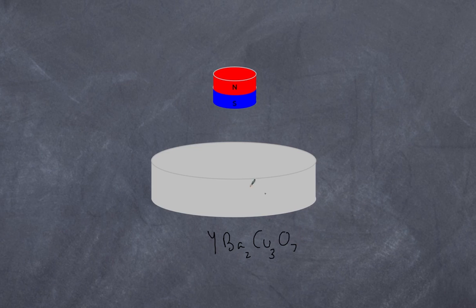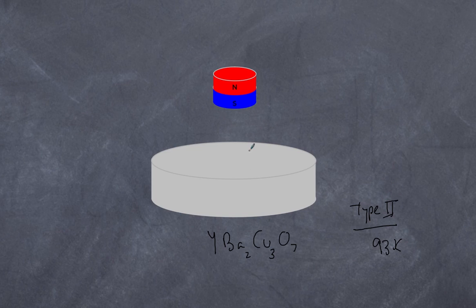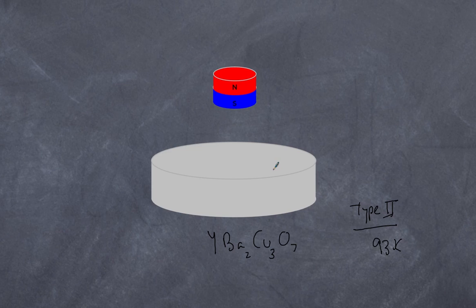When the Meissner effect is demonstrated in the classroom, we use a material made up of yttrium, barium, copper, and oxygen — a type 2 superconductor. One interesting thing about this type 2 superconductor is that its critical temperature is 93 Kelvin, which is above the boiling point of liquid nitrogen, meaning you can cool it below its critical temperature using liquid nitrogen. The partial penetration of magnetic field lines leads to a phenomenon called flux pinning, which explains why the magnet can remain fairly stable above the disc.